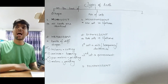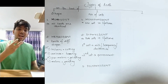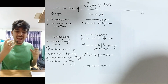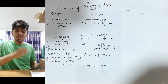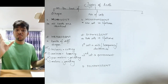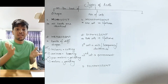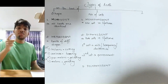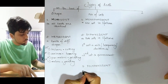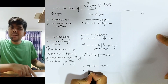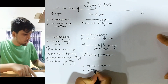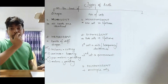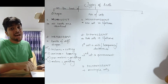Number three: Polyphyodont — multiple sets of teeth in a lifetime. To compare to a cartoon example, the shark keeps getting new sets of teeth to replace old ones. So polyphyodont means multiple sets in a lifetime.